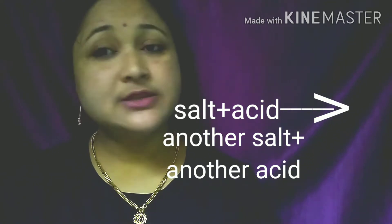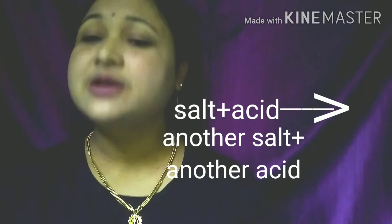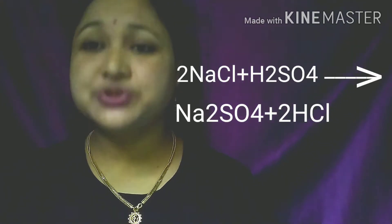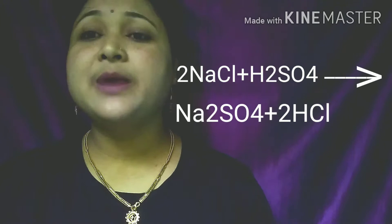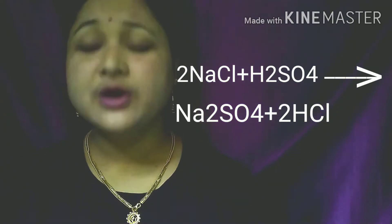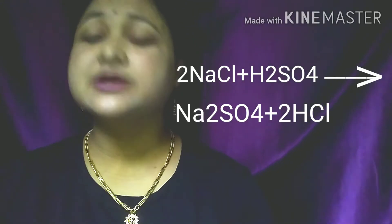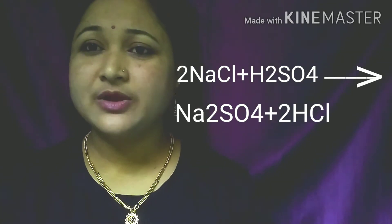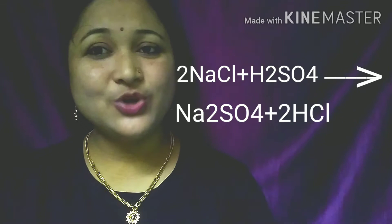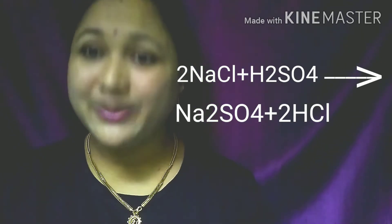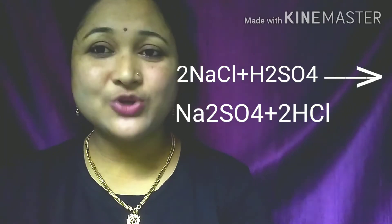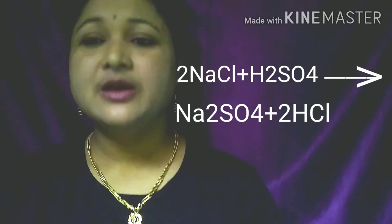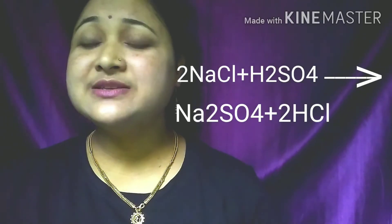In this method, common salt — sodium chloride — and sulfuric acid are used as reactants. They are made to react at a temperature above 200°C. The resulting products are sodium sulfate and hydrochloric acid: a new salt from the original salt, and a new acid.